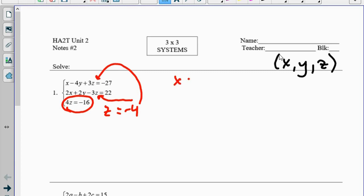So notice I have x minus 4y plus 12 equals negative 27, and 2x plus 2y plus 12. Oh, I'm sorry, the first one should be a minus 12 equals 22.